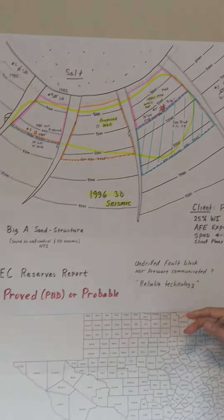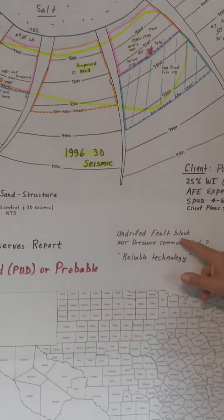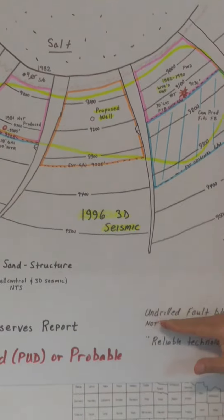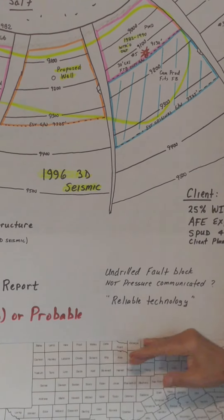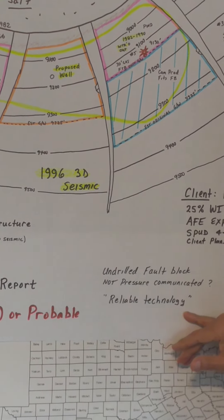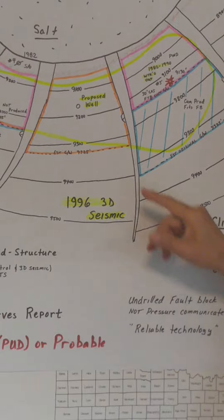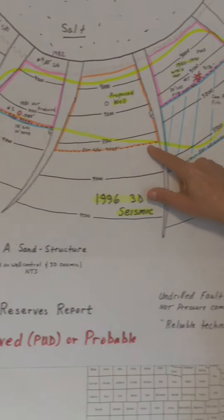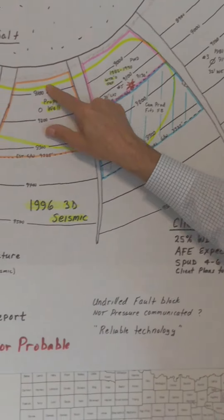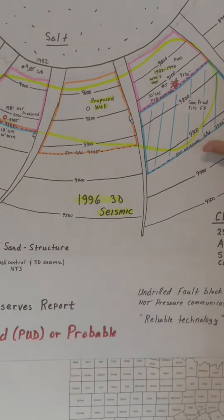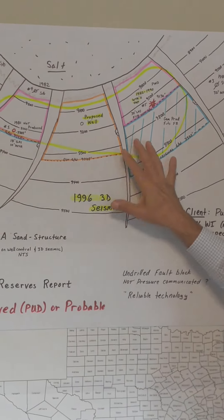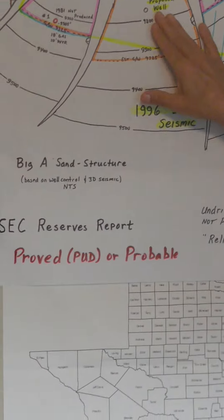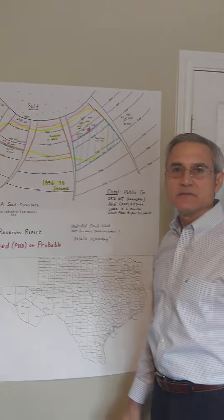SEC guidelines say that if you have an un-drilled fault block and you're not sure it's pressure communicated with the other reservoirs, you might not be able to book that as proved. But they also say you can use reliable technology. The seismic shot in 1996 has a very bright amplitude covering this area, and the geophysicist says that it's a direct hydrocarbon indicator based on his experience. So the question is: can we book a proved or probable for this location and help the client out? I'd like to get your opinion.